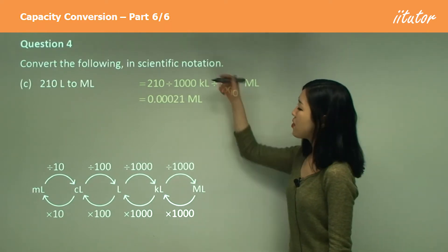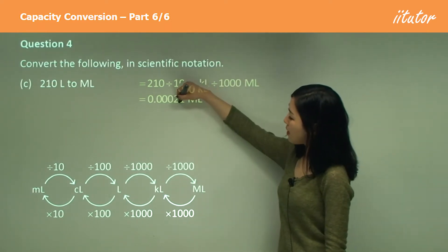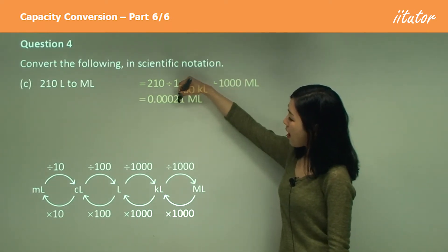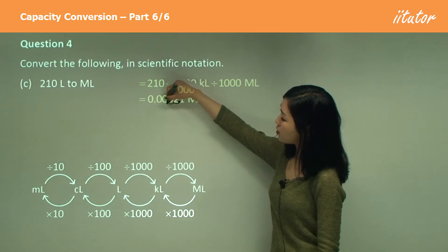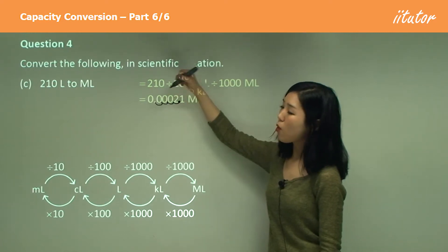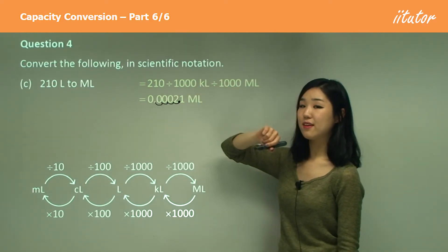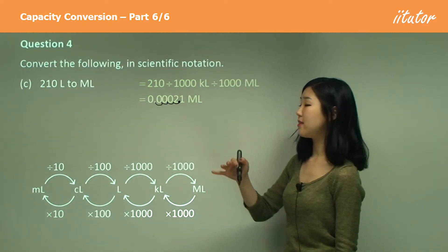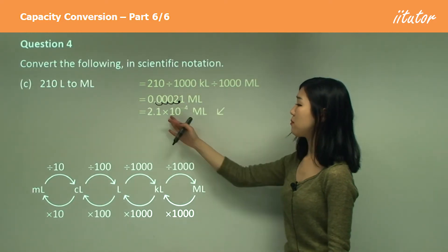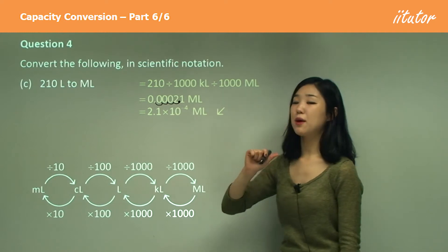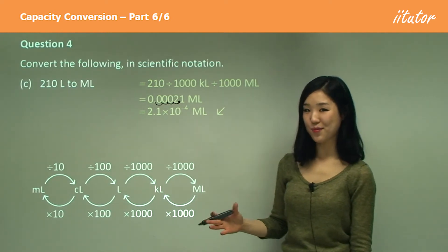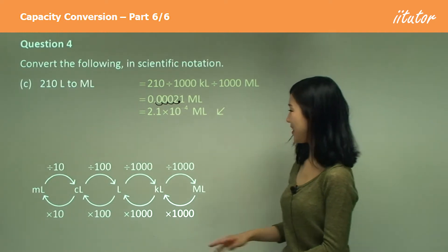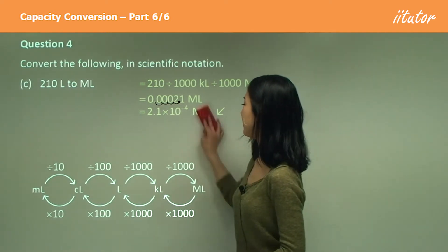If I put the decimal number here, I have to go back four places. So it's going to be 2.1 times 10 to the power of negative 4. That's the answer.